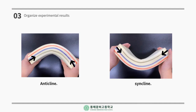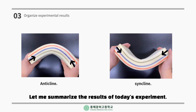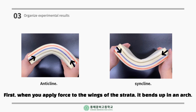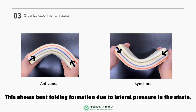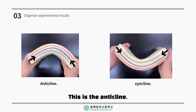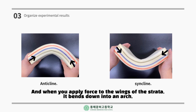Let me summarize the results of today's experiment. First, when you apply force to the wing of strata, it bends up in an arch. This shows bent folding formation due to lateral pressure in the strata — this is an anticline. And when you apply force to the wings of the strata, it bends down into an arch, which becomes the syncline.